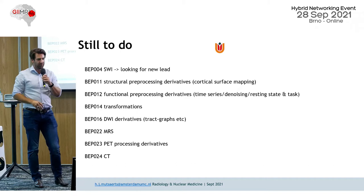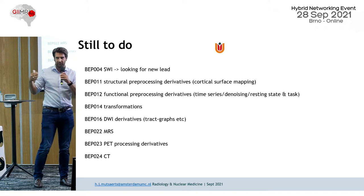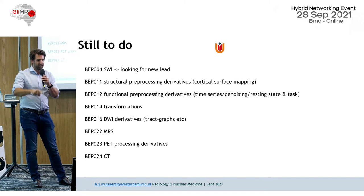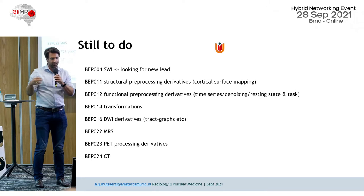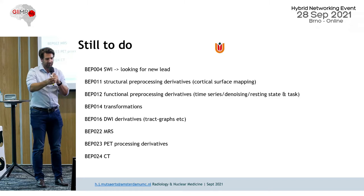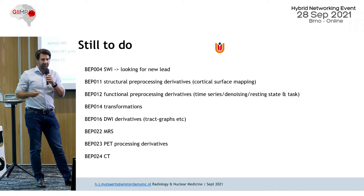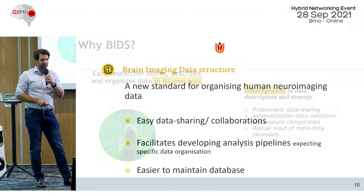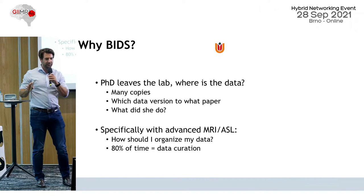These are examples of things that are still open. We could extend this list on the BITs website with items the Glimmer community wants to introduce — scan types not yet there, like SWI, processing derivatives such as transformations from native to standard space, longitudinal registration, and MRS, which we heard about today. So there's still exciting work to do.